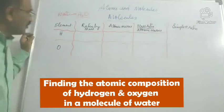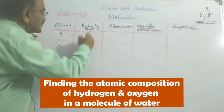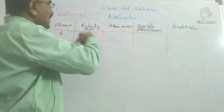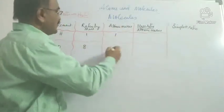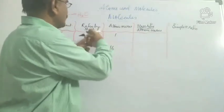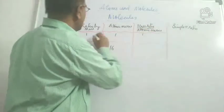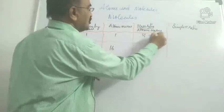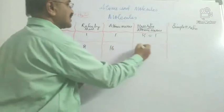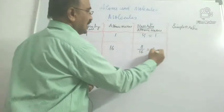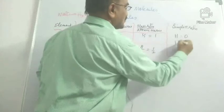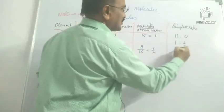We will see that the ratio of masses of hydrogen and oxygen is 1 to 8. The atomic mass of hydrogen is 1 unit and that of oxygen is 16 units. I find the ratio of mass to atomic masses: for hydrogen, 1 divided by 1 equals 1. For oxygen, 8 divided by 16 gives 1 by 2. So the ratio of hydrogen to oxygen is 1 to 1/2, which becomes 2 to 1.